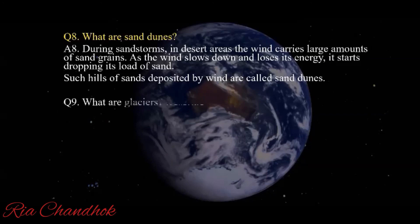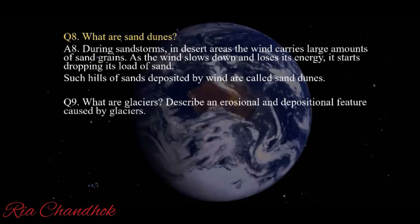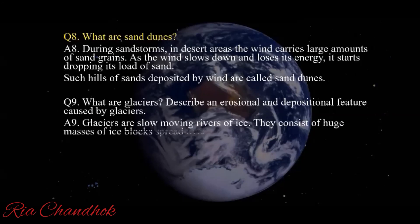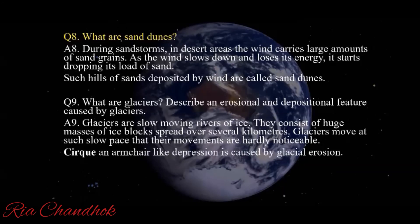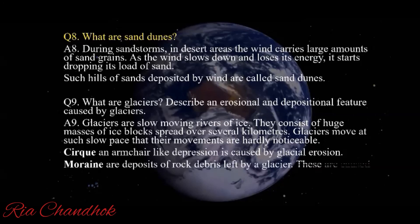Next: what are glaciers? Describe erosional and depositional features caused by glaciers. Glaciers are slow-moving rivers of ice consisting of huge masses of ice blocks spread over several kilometers. Glaciers move at such a slow pace that their movement is hardly noticeable. A cirque is an arm-like depression caused by glacial erosion. Moraines are deposits of rock debris left by a glacier, caused by the depositional activity of glaciers.